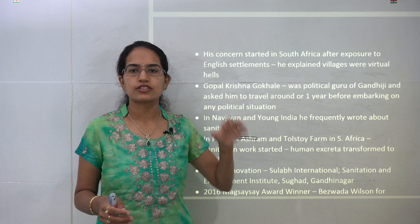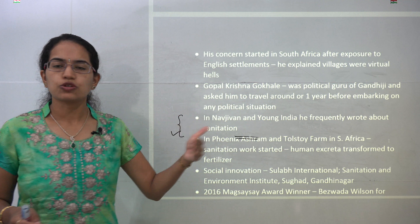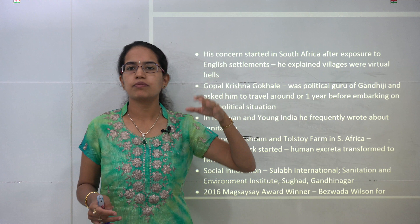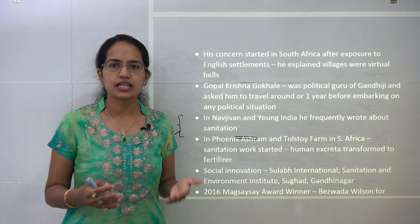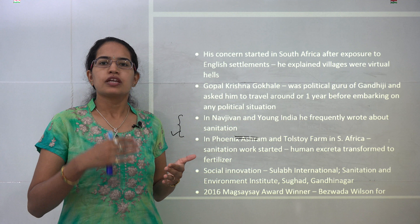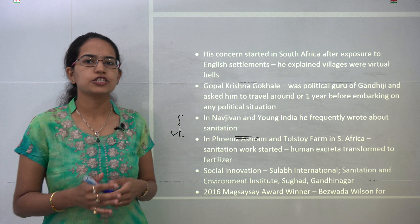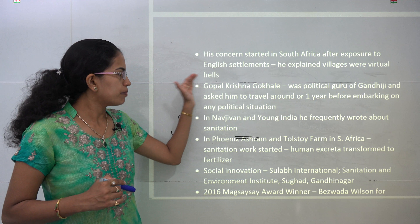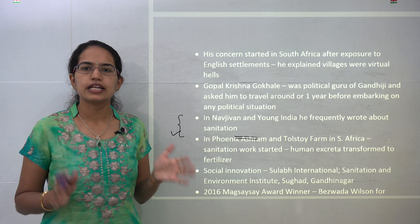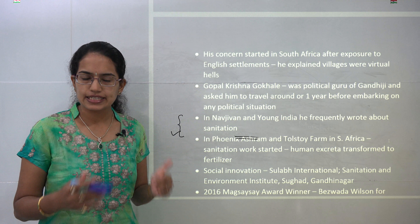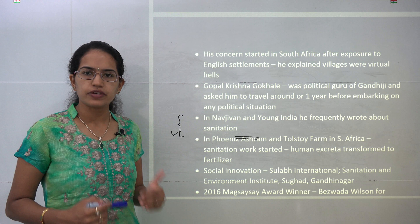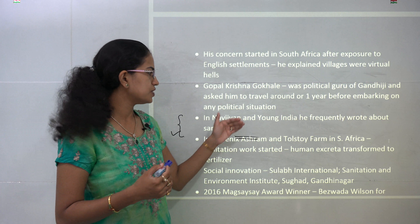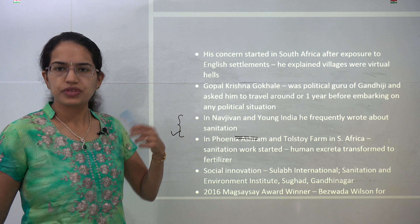Gandhiji said that everyone must be his own scavenger — it's not required to have sanitation problems in the country if everyone looks after their own waste. Under Sustainable Development Goal 6, we talk about availability and sustainable management of water and sanitation for all. With this motto, Gandhi's experiments included building and cleaning toilets, emancipating sanitation workers, and removing social discrimination and untouchability.